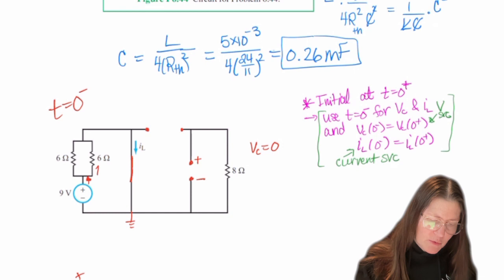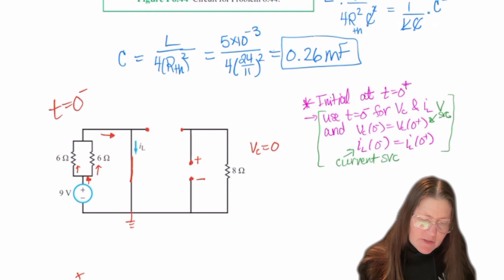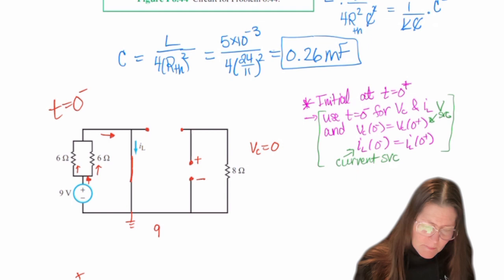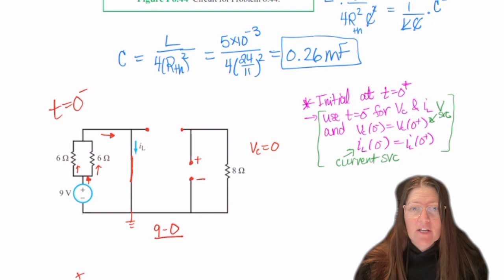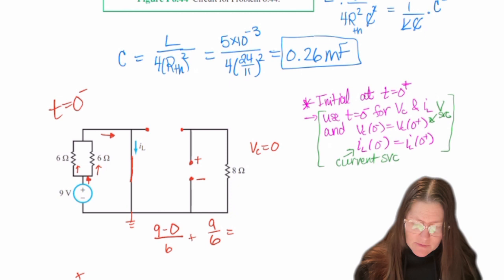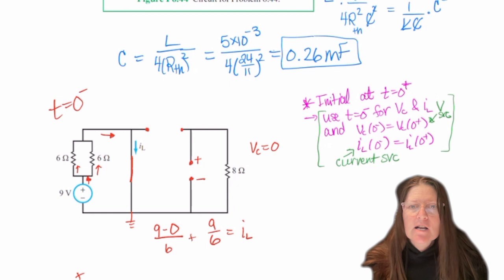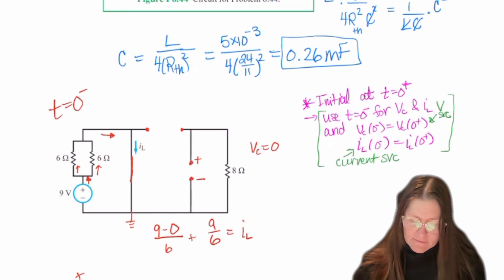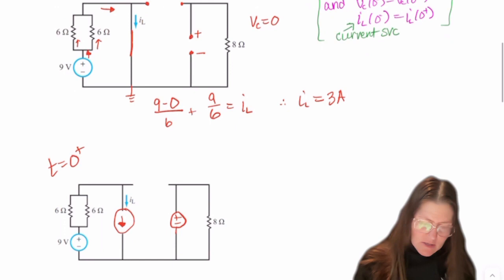And then we'll go through the two 6 ohm resistors and then through here. So I can say with this being zero, I can say that that current is 9 minus zero over the two resistors in parallel. So I can either do 9 over 6 plus 9 over 6 equals IL. Or I can just do those two in parallel will be 3 ohms and 9 over 3. So IL either equation will give you 3 amps. So this will be 3 amps.